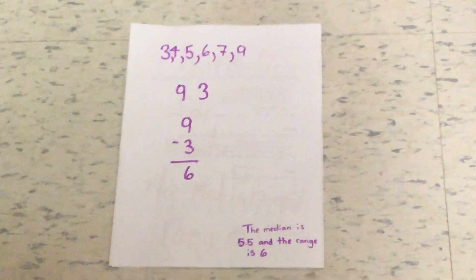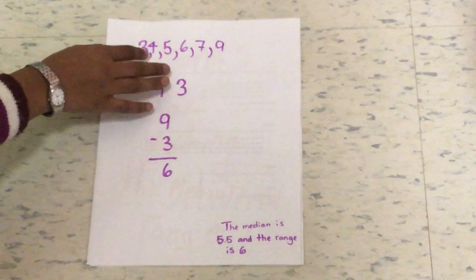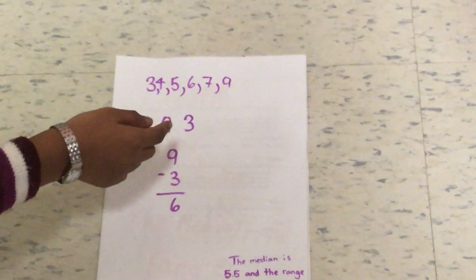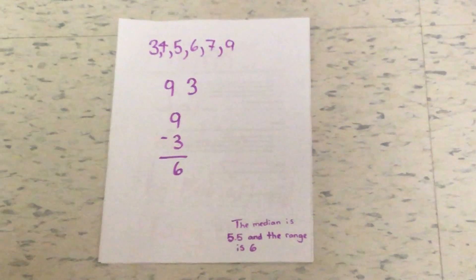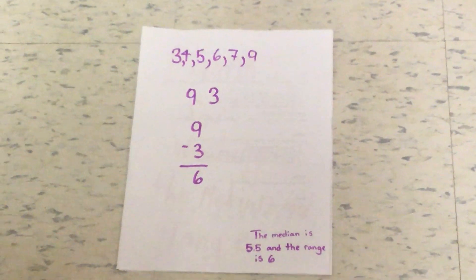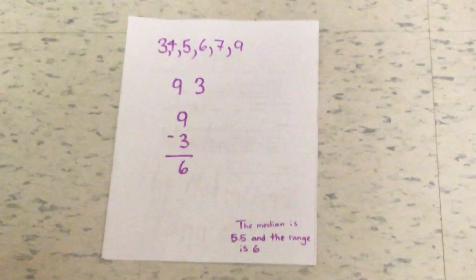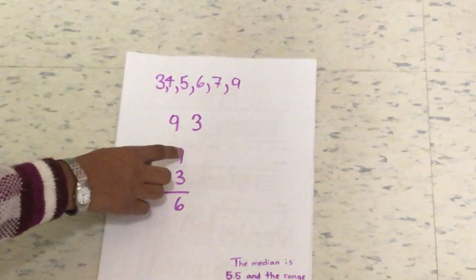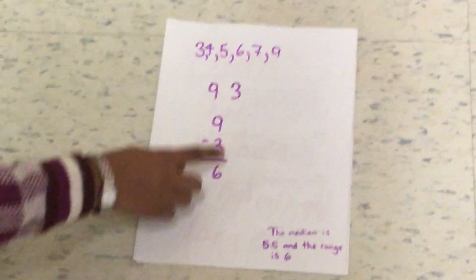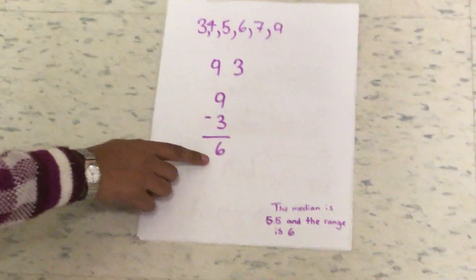Now to find the range, we take our example here, 3, 4, 5, 6, 7, and 9, and we have to take the greatest number and the smallest number, which is 9 and 3. So we put the greatest number, 9, minus the smallest number, which is 3. So 9 minus 3 equals 6.